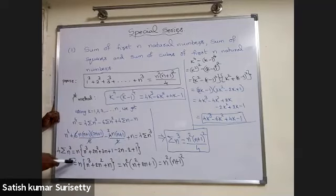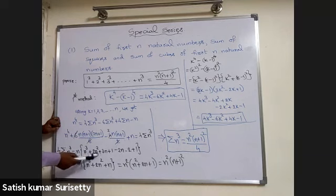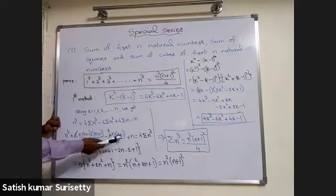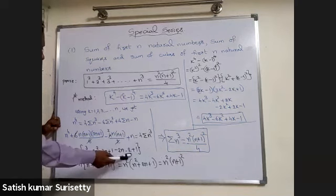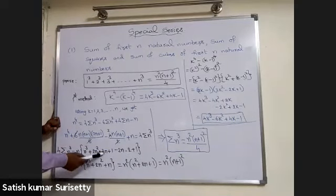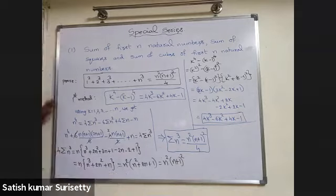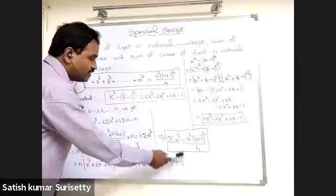Take n common entirely. Once n is taken common, n cubed remains. Then plus n plus 1 into 2n plus 1, giving 2n squared plus 3n plus 1, minus 2 into n plus 1, giving minus 2n minus 2, plus 1. The terms 1 plus 1 minus 2 cancel. So we get n cubed plus 2n squared plus 3n minus 2n. Taking n as common again gives n squared plus 2n plus 1, which is n squared into n plus 1 whole squared.